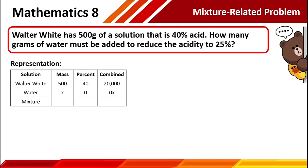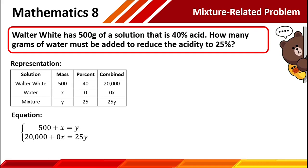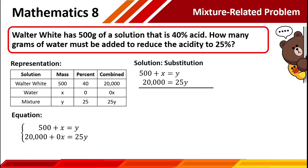In this given problem, we need to mix Walter White's solution and water to have an unknown mass and to reduce the acidity to 25%. When we combine the mass of this mixture and the concentration of acid, we will have 25y. Let's proceed in creating our equations, focusing on the subtopics which have a variable. For mass, we have 500 plus x is equal to y. And for the combination of the mixture, we have 20,000 plus 0x is equal to 25y. The best way to solve this is through substitution. We can rewrite these equations as 500 plus x equals y and 20,000 equals 25y.